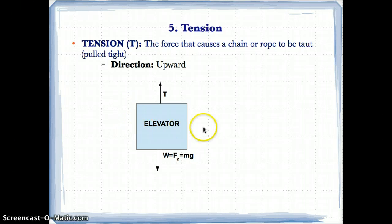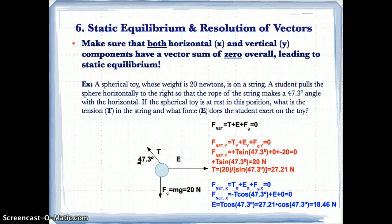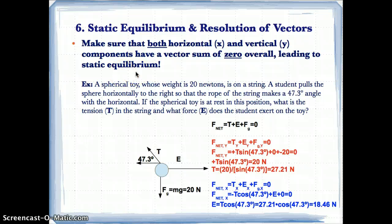When you resolve vectors with static equilibrium, you have to make sure that both the horizontal and vertical components have a vector sum of zero overall, leading to static equilibrium. In order to have equilibrium, the net force has to equal zero overall, so the net force in the y direction and the net force in the x direction both have to equal zero.